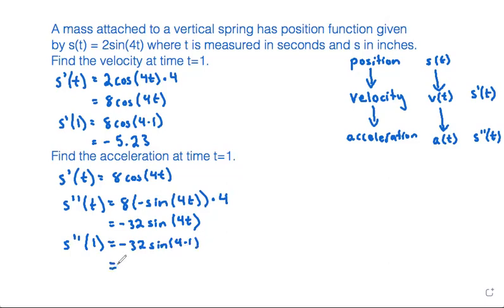-32 times sin(4) equals 24.22. So that would be our acceleration at time t = 1.